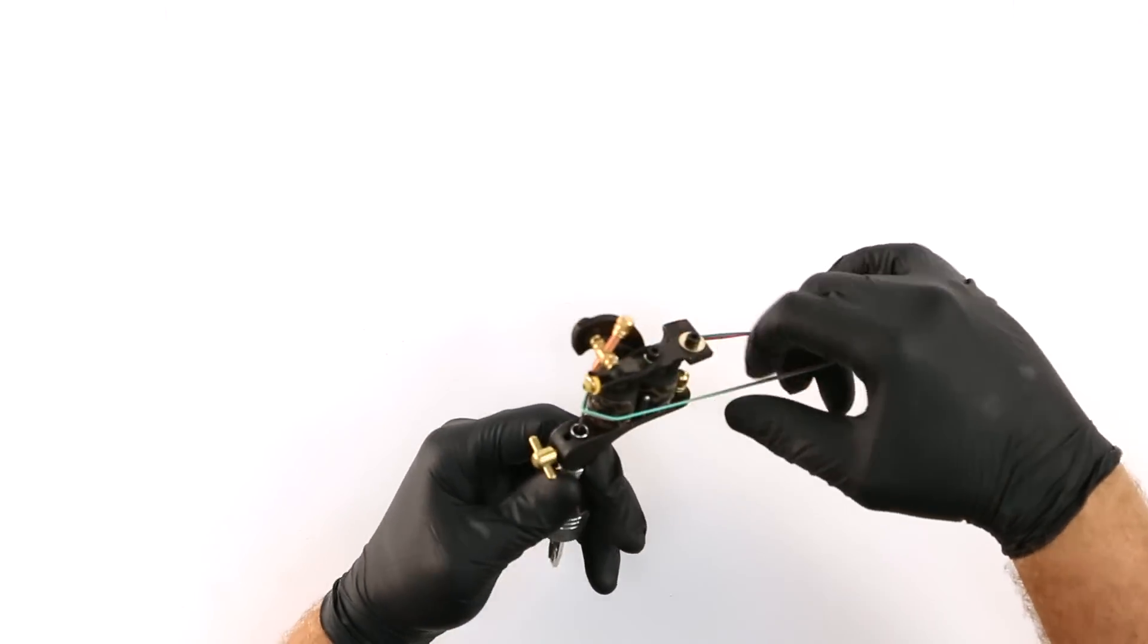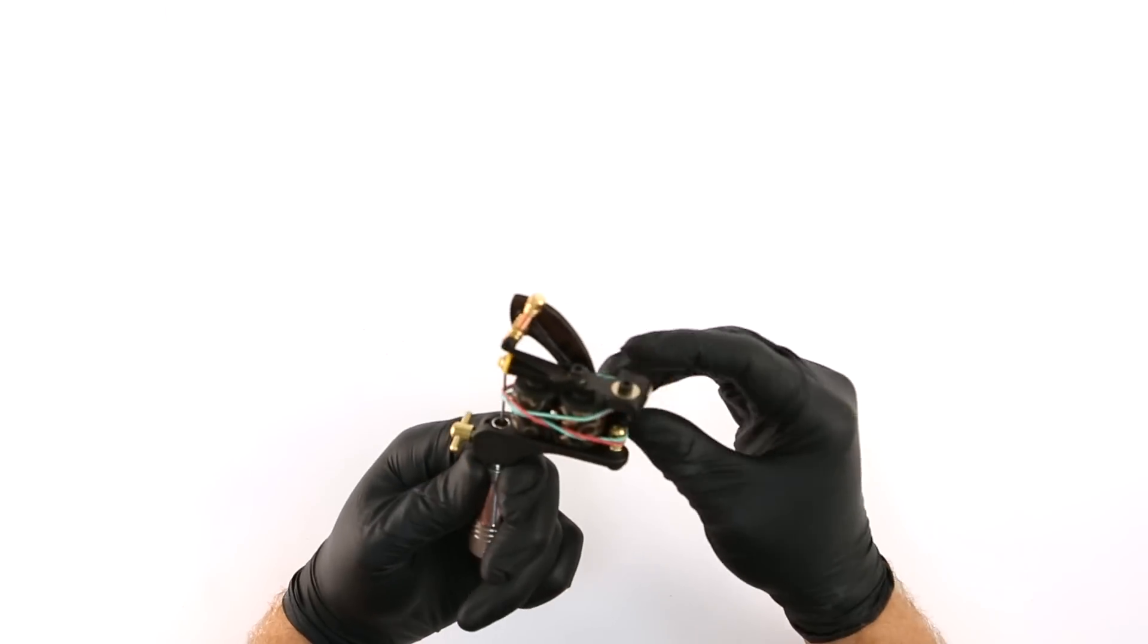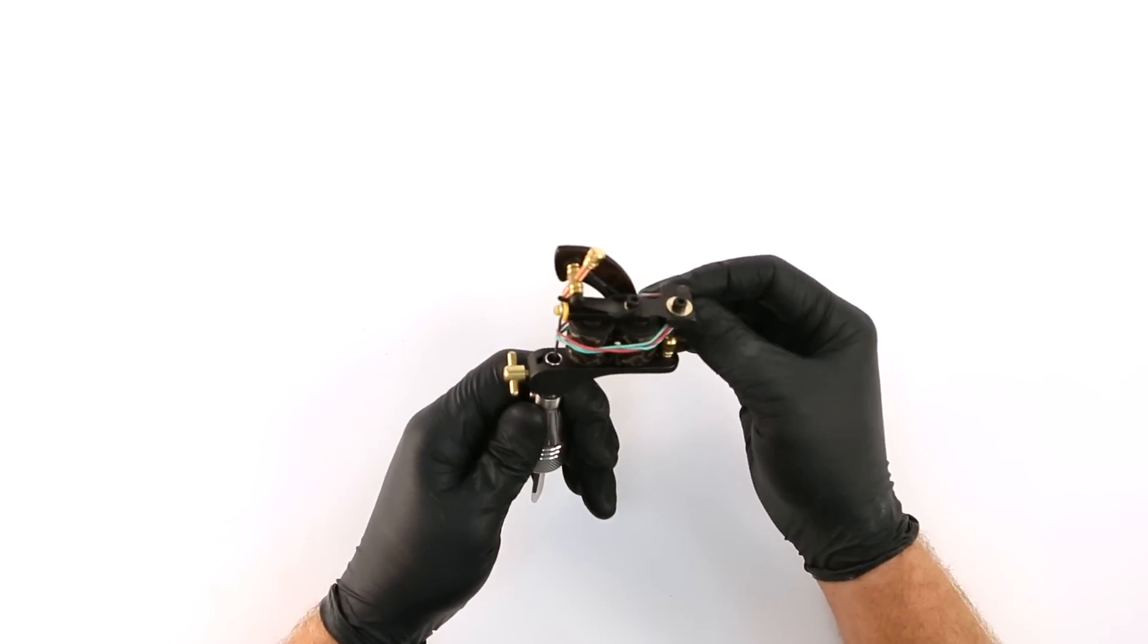The final step is to attach your rubber bands. We suggest using two or three rubber bands because if one breaks you don't have to worry about your needle jumping off track while it's in someone's skin.